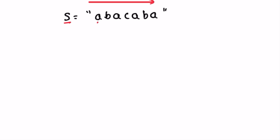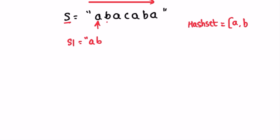We start forming the first substring. The first character is 'a'. Moving to the next character 'b' — it's unique. How do we check if it's unique? We compare it with the previous elements using a HashSet. We add 'a' to the HashSet, then check if 'b' is present — it is not, so we add it. Moving to the next character 'a': we check if 'a' is present inside the HashSet — yes it is, so this ends our first substring.